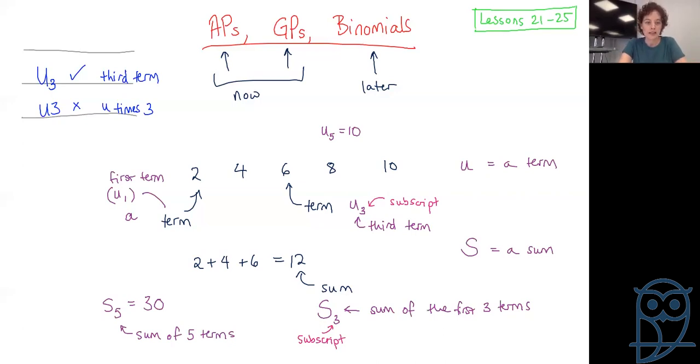Let us talk about APs versus GPs. AP stands for arithmetic progression, GP stands for geometric progression. APs are all about addition. Like we had in that previous example where we had 2, 4, 6, 8, 10 - we added two each time. That's an AP. GPs are all about multiplication.